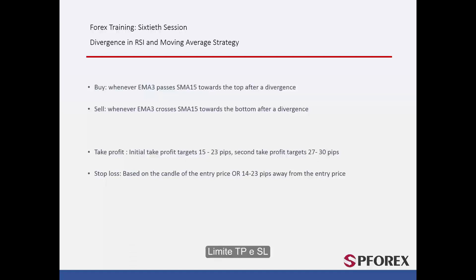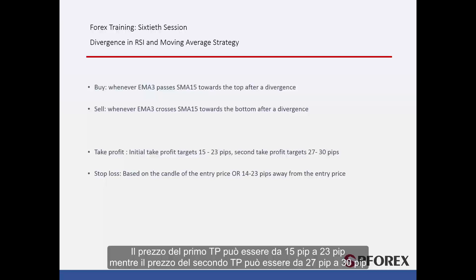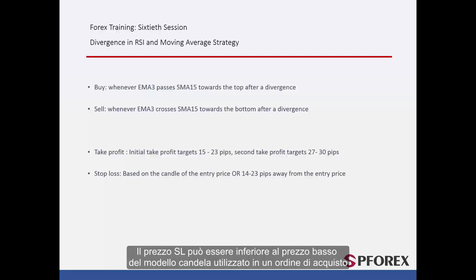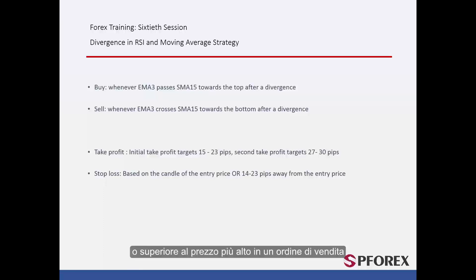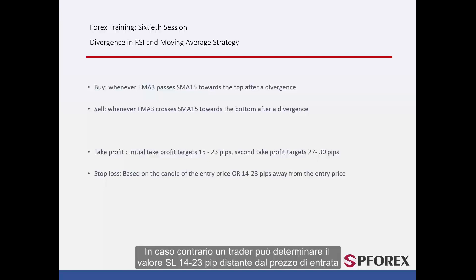Regarding TP and SL limits: the first TP price may be from 15 pips to 23 pips, while a second TP price can be from 27 pips to 30 pips. SL price can be lower than the low price of the utilised candle pattern in a buy order, or higher than the high price in a sell order. Otherwise, a trader can determine SL value 14 to 23 pips away from the entry price.